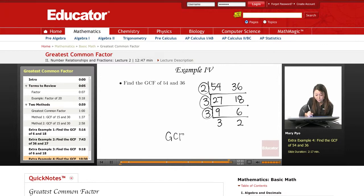The GCF is 3 times 3 times 2. 3 times 3 is 9, 9 times 2 is 18.